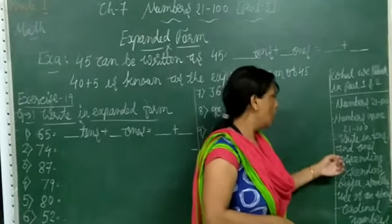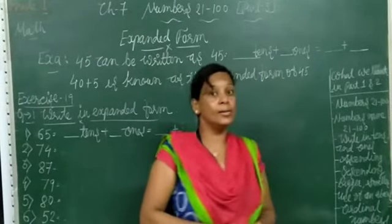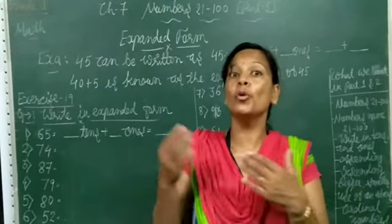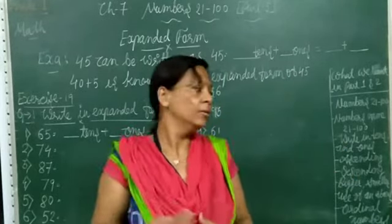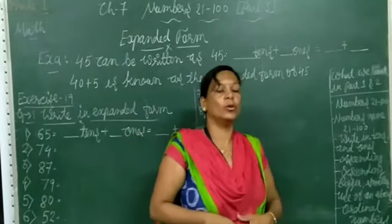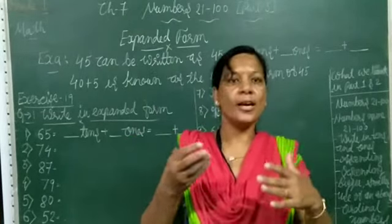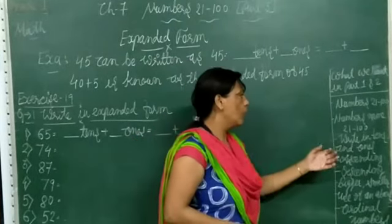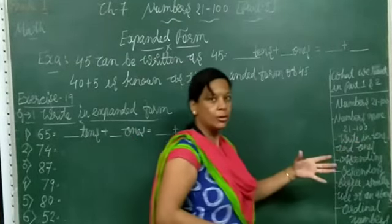Now, how to write ascending order and descending order? Ascending order means small to big — chhoti se bada. Descending order means big to small — bada se chhota.